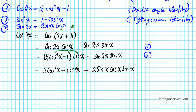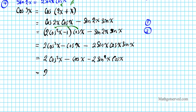Now I'm going to distribute cosine x to the two terms on the left side. Distributing cosine x gives me 2 cosine to the third x minus cosine x. Then combining the two sine x terms gives sine squared x, so the full expression becomes 2 cosine to the third x minus cosine x minus 2 sine squared x cosine x. Now I'll factor out minus cosine x from the last two terms, giving 2 cosine to the third x minus cosine x times (1 plus 2 sine squared x).